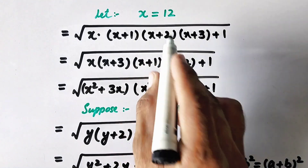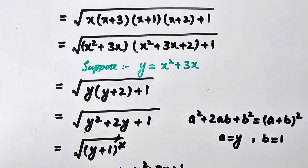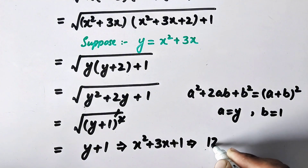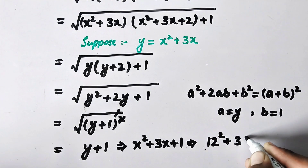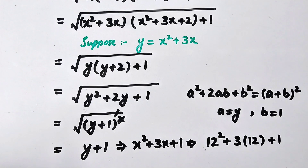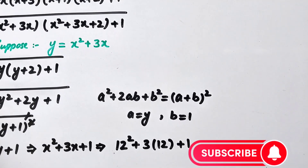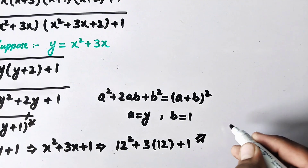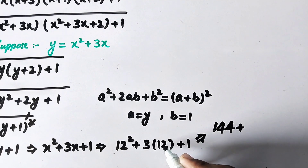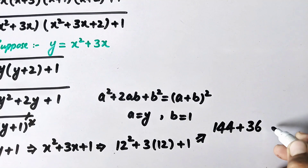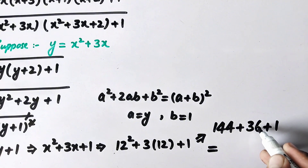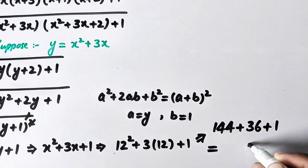Recalling that x equals 12, substituting gives us 12 squared plus 3 times 12 plus 1, which equals 144 plus 36 plus 1.